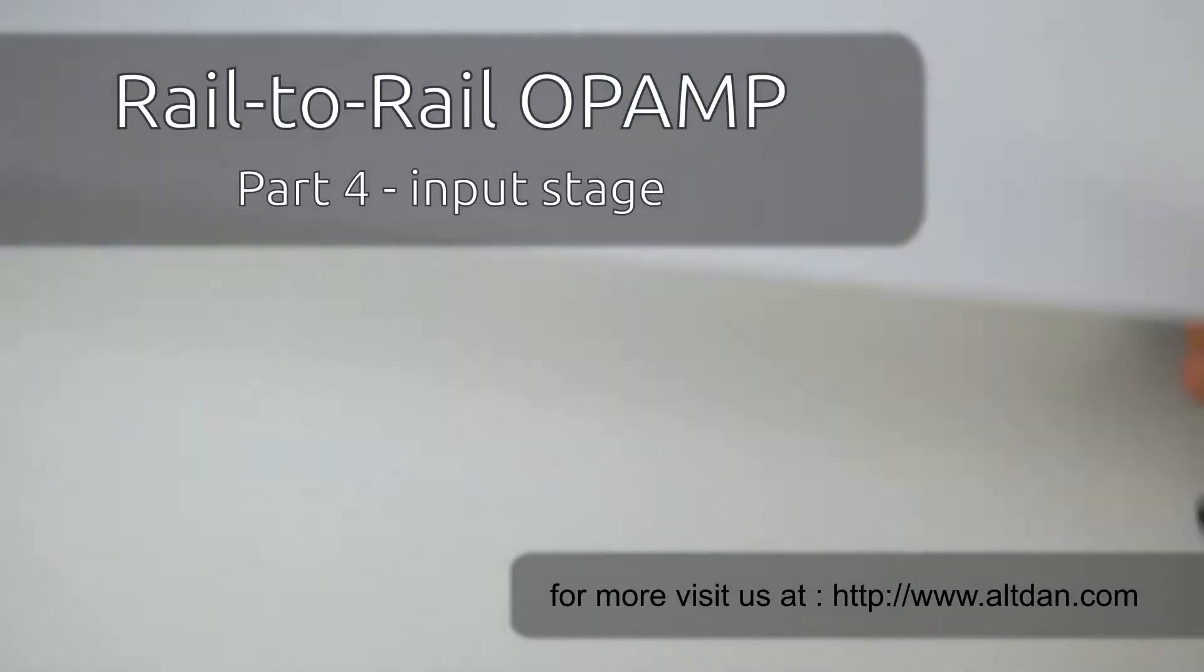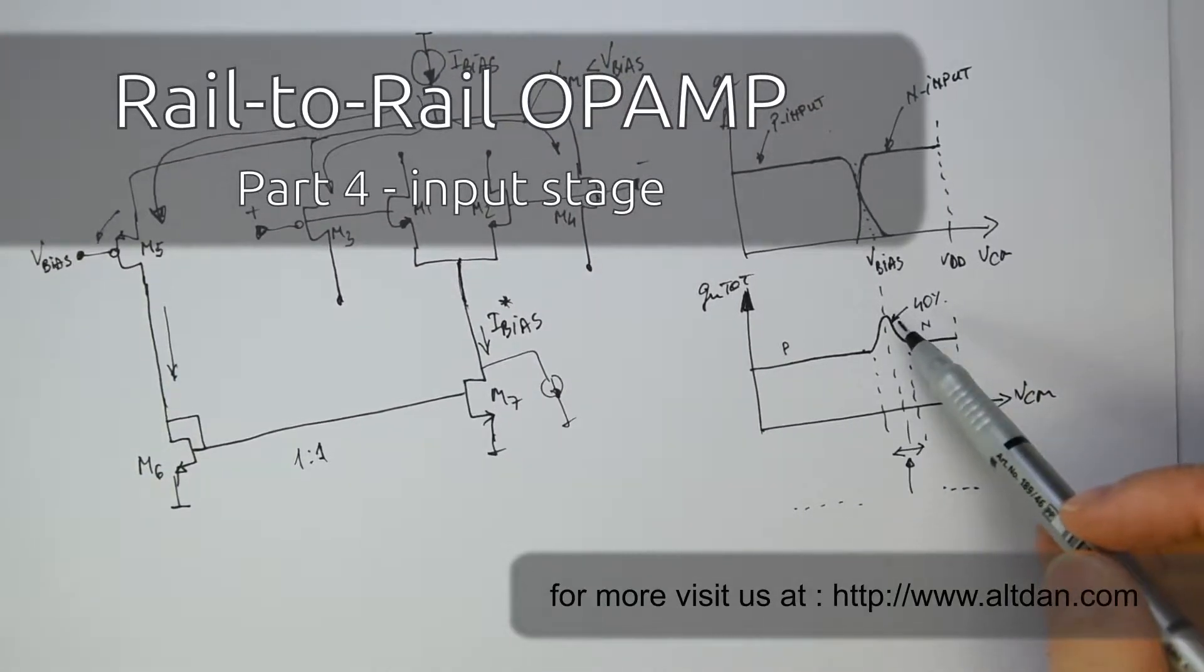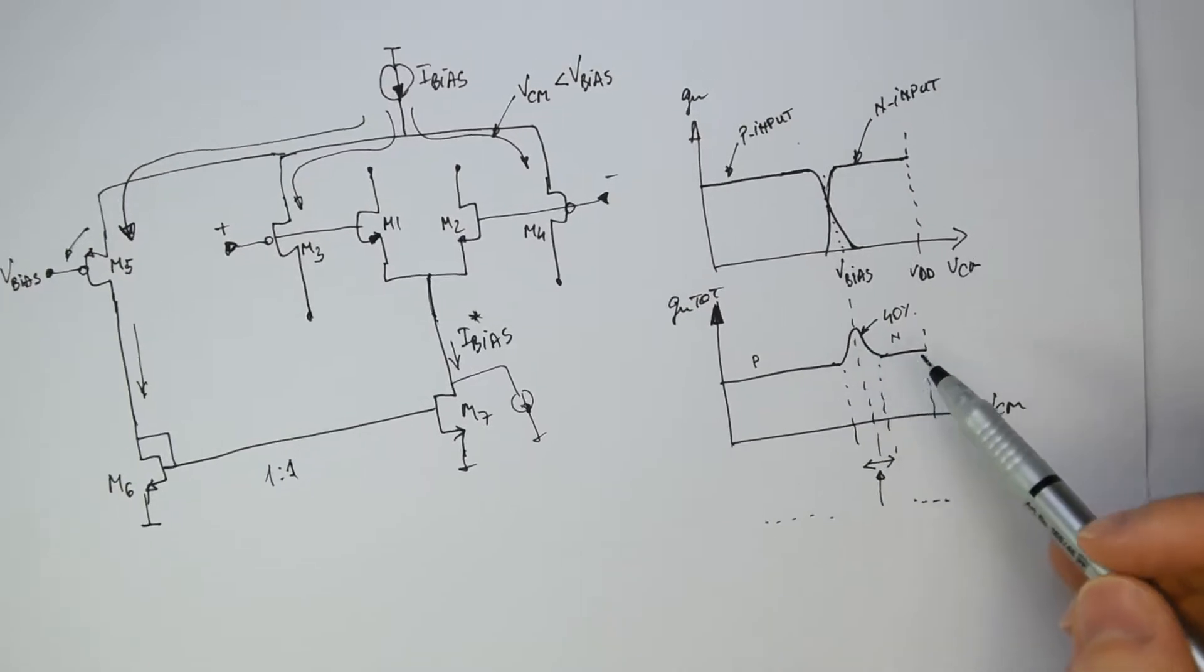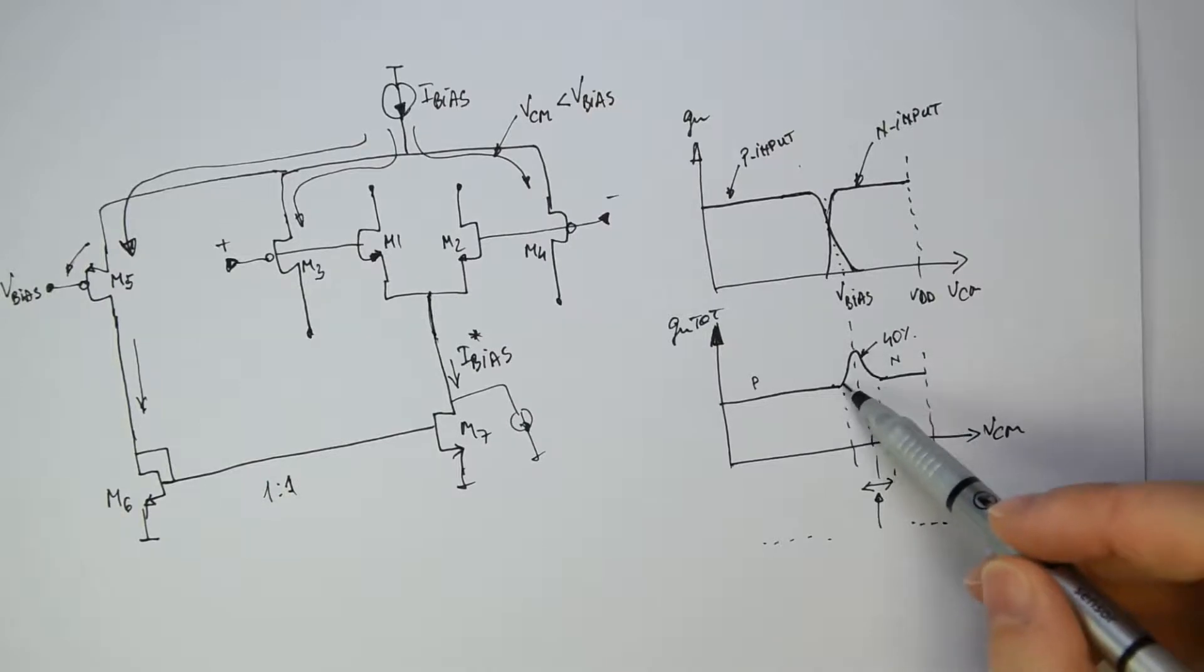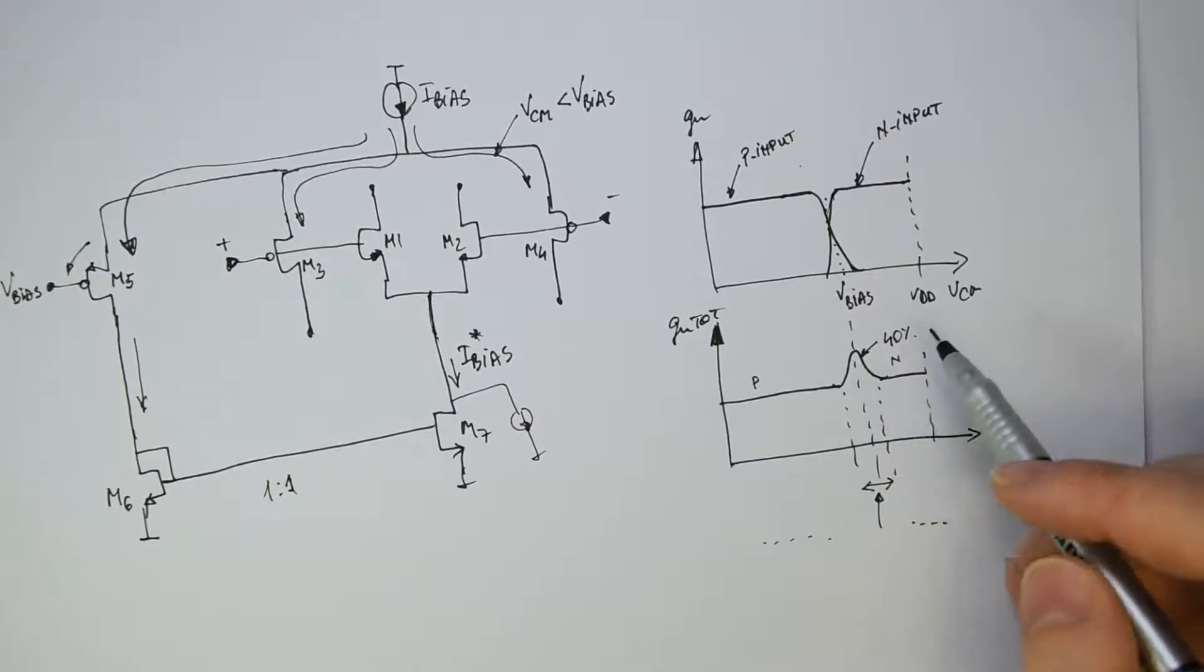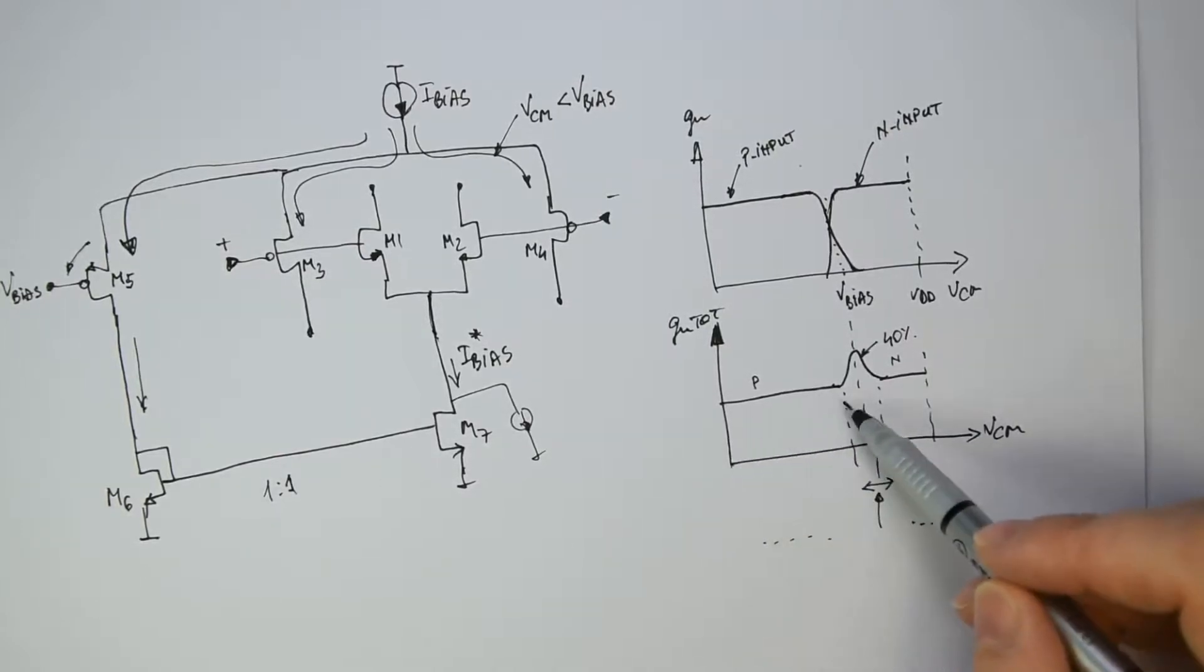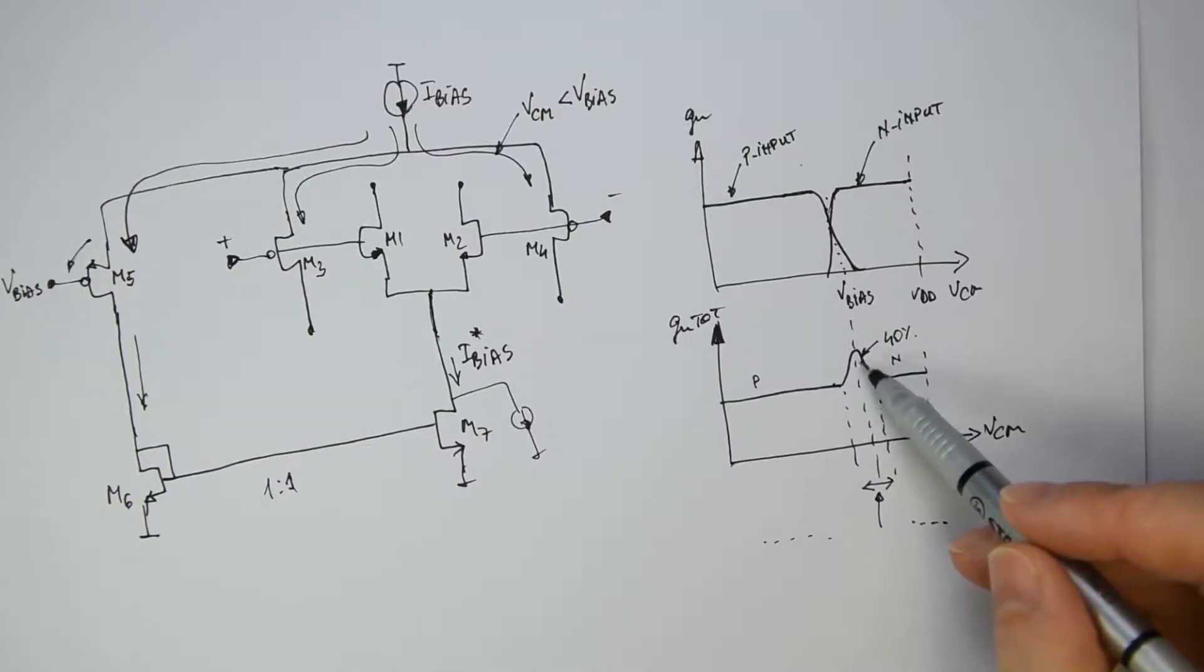Hi. Let's start now with the solution for the problem from the previous lesson. We said there that the GM is having an overshoot exactly in the transition moment. Now let's try to find a solution starting from the idea that we have to correct only this part. So we don't care what is happening in the other range from zero to the bias and the bias to the VDD, but just focus what is happening on the VBIAS threshold.